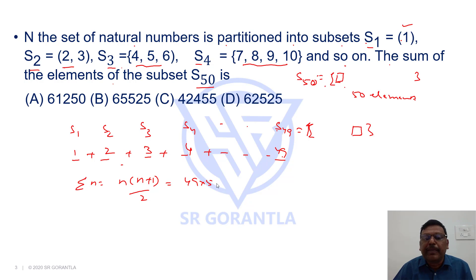Sum of first n natural numbers sigma n equals to n into n plus 1 by 2. 49 into 50 by 2, 25s, 49 25s, 1225.